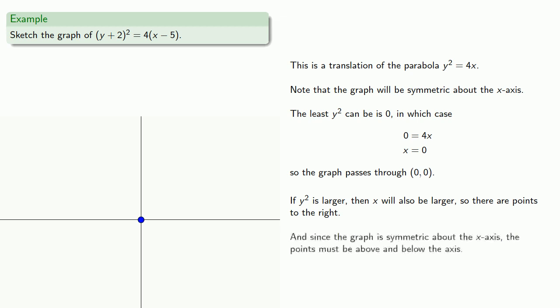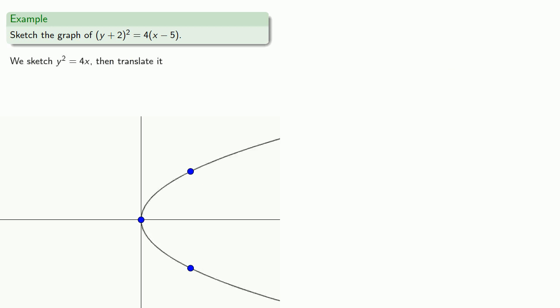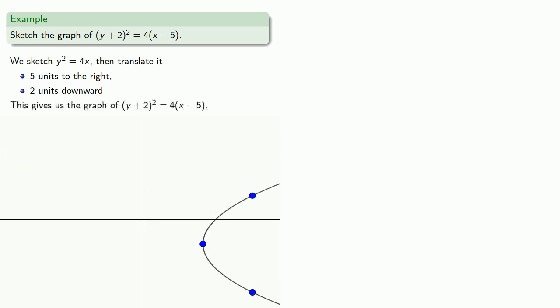And since the graph is symmetric about the x-axis, the points must be above and below the axis. And so the parabola opens to the right. And so we'll sketch y squared equals 4x, and then we'll translate this 5 units to the right, and 2 units downward. And this gives us the graph of y plus 2 squared equals 4 times x minus 5.